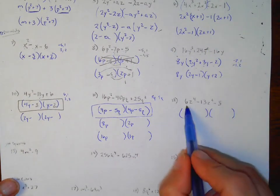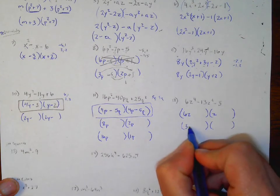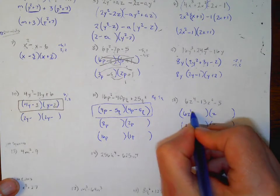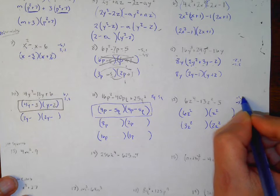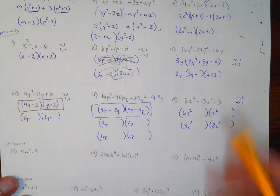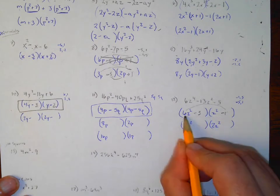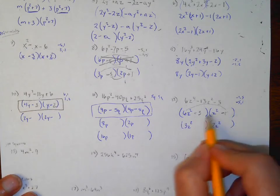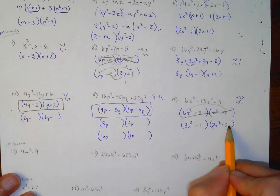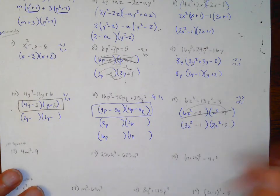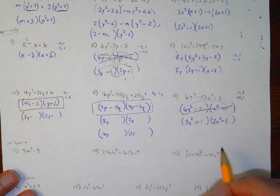This one — 6z⁴−13z²−5 — no GCF. It might be 6z²×1z² or 3z²×2z². For −5, it's either −5 and 1 or −1 and 5. To get −13: try 6z² and z² with −1 and +5: −6+5=−1, doesn't work. Try 3z² and 2z² with +5 and −1: 15−2=13. I need −13, so switch the signs: −5 and +1 gives −15+2=−13. We've got it.